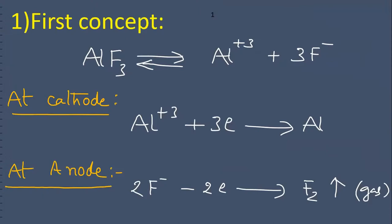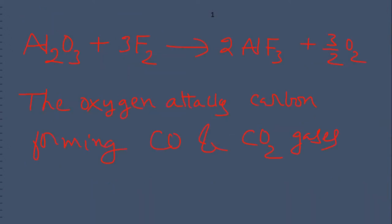The first version: AlF3 ionizes into Al³⁺ and F⁻ ions. At cathode, aluminum is collected. At anode, fluorine gas is collected. This is the net reaction.